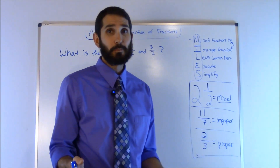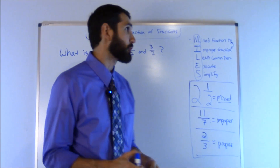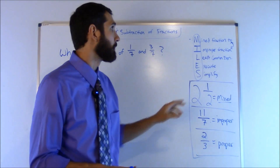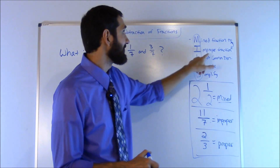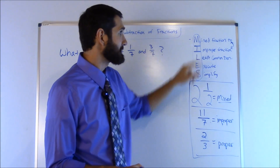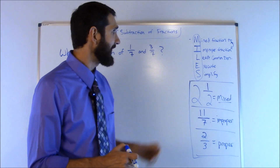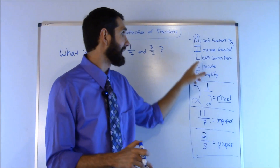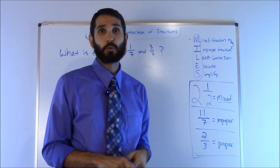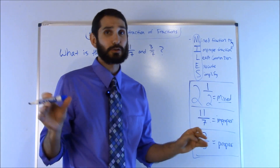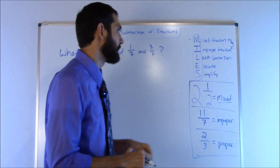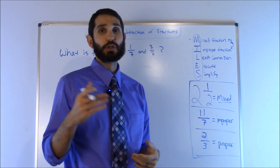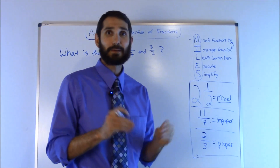I've created a mnemonic to help you remember how to execute fraction addition and subtraction problems, and the mnemonic is MILES. M asks: is there a mixed fraction? If so, convert it to an improper fraction — that's M to I. L stands for least common denominator. E stands for execute — go ahead and solve. And S stands for simplify, reducing the fraction to its lowest possible form.